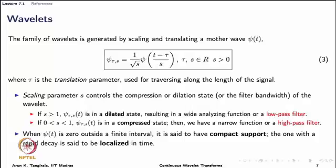Some terminology: when the mother wave or child is zero outside a finite interval, the wave is said to have compact support. When a function has rapid decay, we say it is localized in time — it does not have compact support, meaning it does not exactly go to zero in finite time.